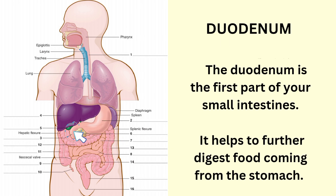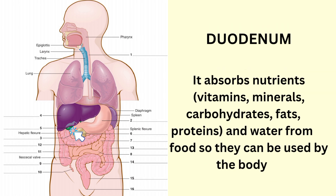Duodenum. The duodenum is the first part of your small intestines. It helps to further digest food coming from the stomach. It absorbs the nutrients, vitamins, minerals, carbohydrates, fats, proteins, and water from food so they can be used by your body.